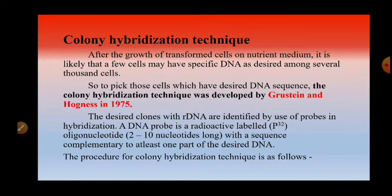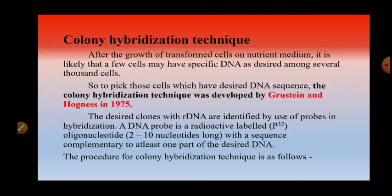The desired clones containing recombinant DNA are identified by use of probes in hybridization. A DNA probe is a radioactive-labelled oligonucleotide sequence — most often labelled with the P32 radioisotope — having 2 to 10 nucleotides. The probe contains a sequence complementary to at least one part of the desired DNA that you are going to isolate.